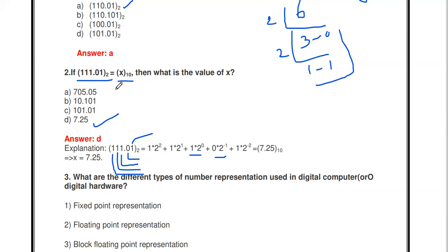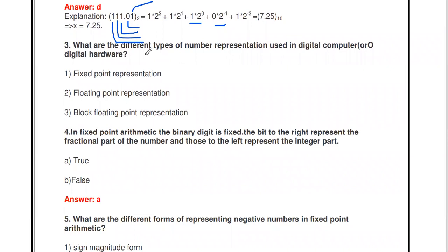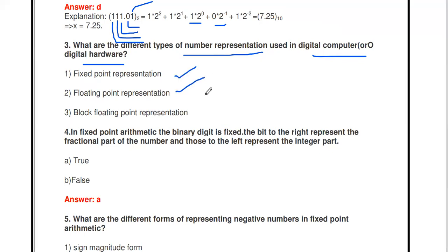The next question: what are the different types of number representation used in a digital computer or digital hardware? There are three methods: fixed point representation, floating point representation, and block floating point representation. These are the three representations of numbers in a digital computer or digital hardware.